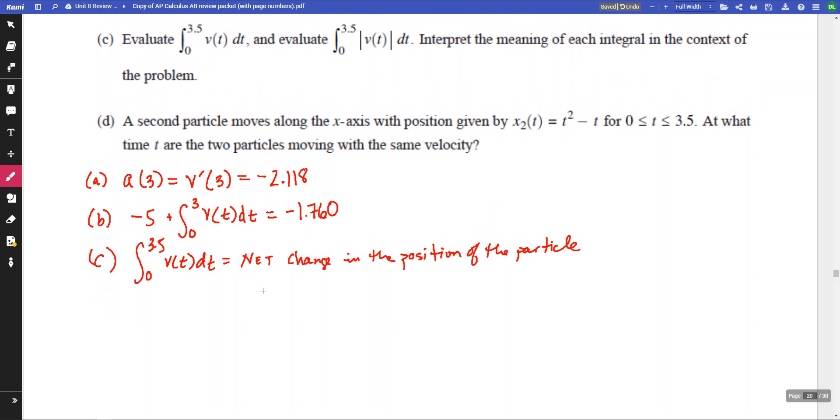So the integral from 0 to 3.5 of the absolute value of velocity is going to be the total distance traveled by the particle. Now we need to make sure that we include our interval. So this will be from t equals 0 to t equals 3.5. And over here, from t equals 0 to t equals 3.5. Please, when you're asked to interpret a meaning, provide the information about what it represents, the context, as well as the interval in context. We don't have any units, so we can't do anything with the units.